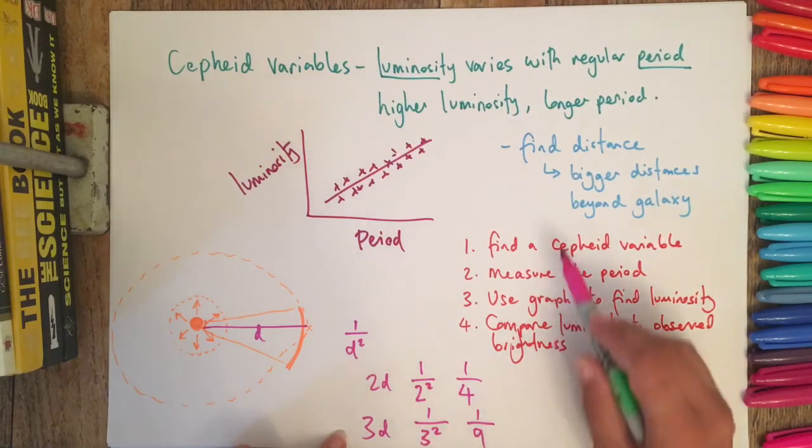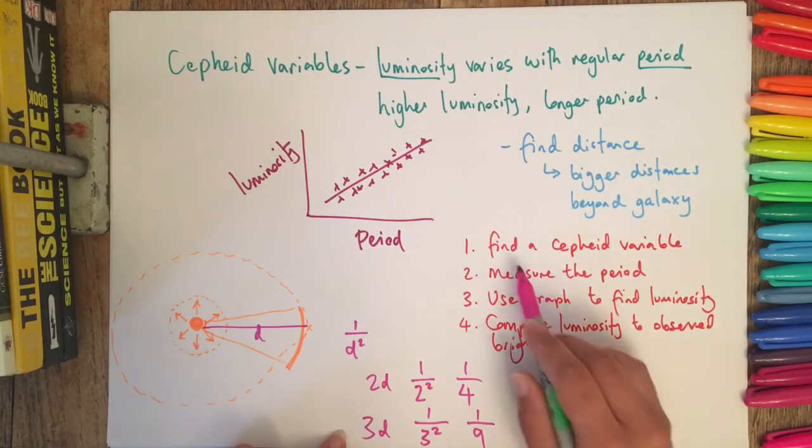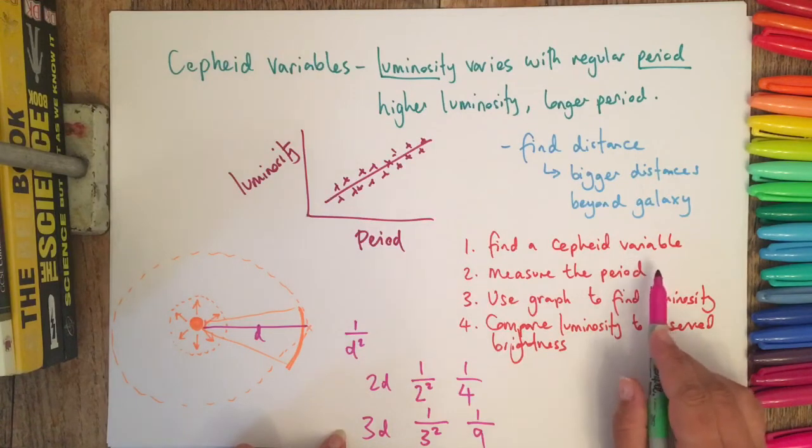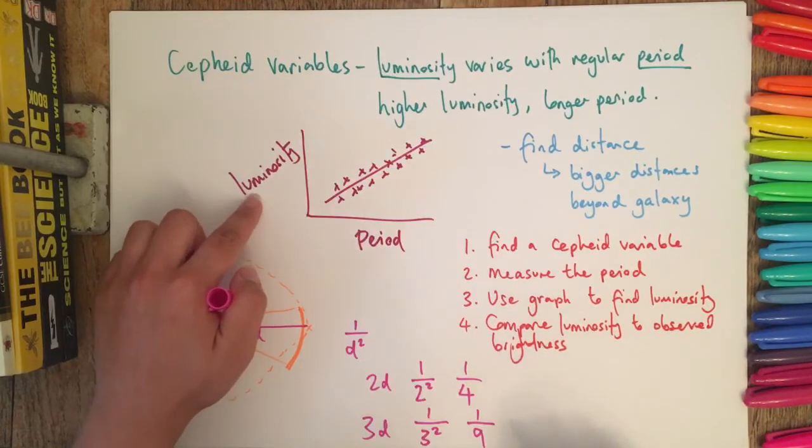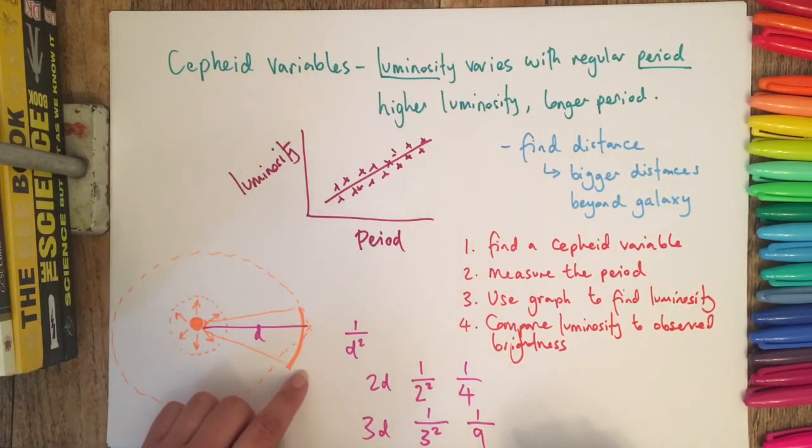I don't think you really need to go into this much detail. You need to know these steps: that you're finding a Cepheid variable, that you're measuring the period which can tell you the luminosity, and then that you compare the luminosity to the observed brightness. I've never seen a question where you've had to do it mathematically like this.